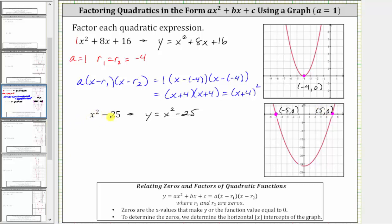To write the given expression in the form a times the quantity x minus r sub one, times the quantity x minus r sub two: a, the coefficient of x squared, is one. Let's let r sub one equal negative five, and r sub two equal positive five.